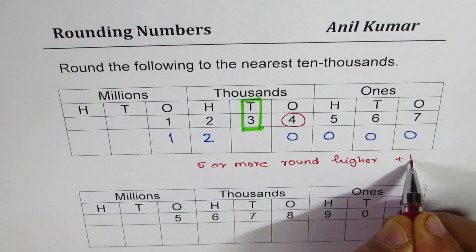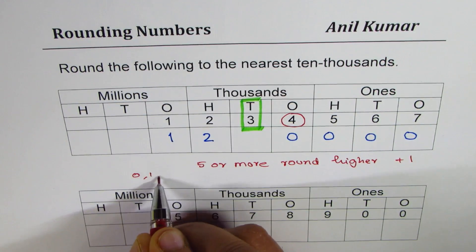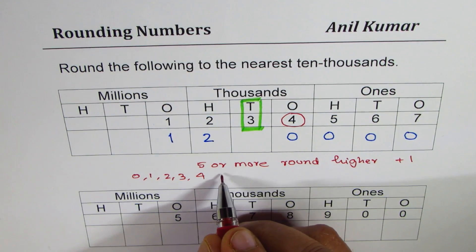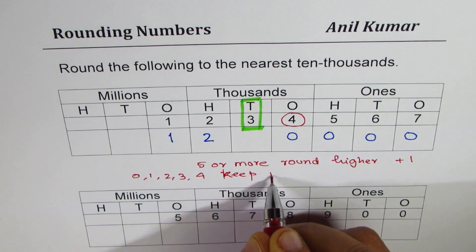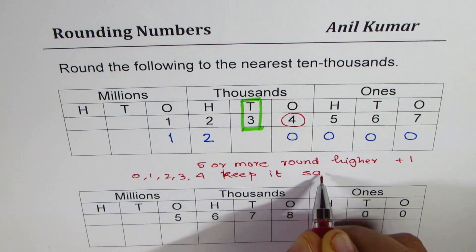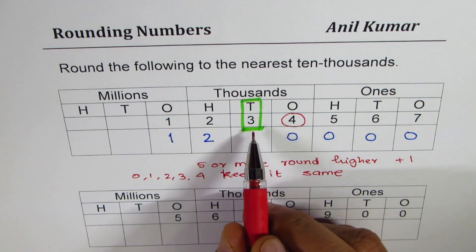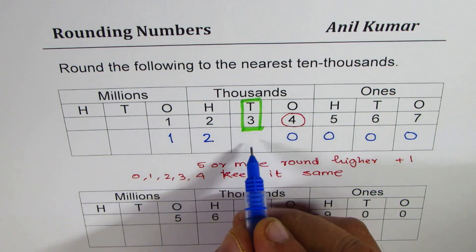Higher means plus 1. If it is 0, 1, 2, 3, or 4 then retain the number. Keep it same. In our case the number on the right of ten thousand position is 4. So we will keep it same. That is it will remain as 3.